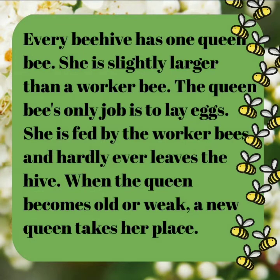Every beehive has one queen bee. She is slightly larger than a worker bee. The queen bee's only job is to lay eggs. She is fed by the worker bees and hardly ever leaves the hive. When the queen becomes old or weak, a new queen takes her place. There are three types of bees in a beehive: the queen bee, the worker bee, and the male bee or drone. The queen bee is slightly larger than a worker bee. Her only job is to lay eggs, and whatever she needs to eat is given by the worker bees. When she becomes old or weak, a new queen takes her place.